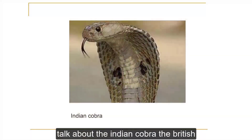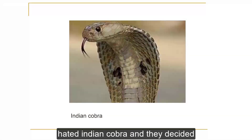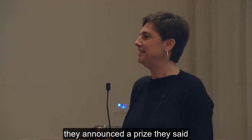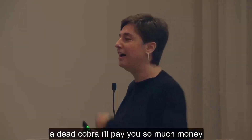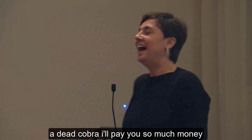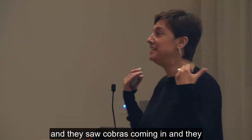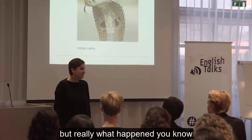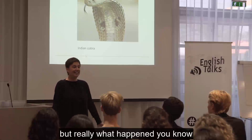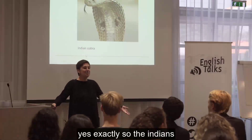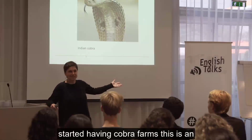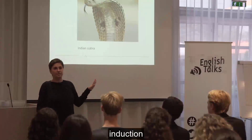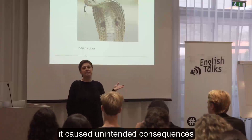Before that, I want to talk about the Indian Cobra. The British rule hated Indian Cobra and they decided they were going to get rid of it. So they announced a price policy — they said, 'You bring me a dead cobra, I'll pay you so much money.' And they saw cobras coming in and said, 'Aren't we really successful in our policy? What a good idea.' But really, what happened? The Indians started having cobra farms. This is an example of failure in backward induction — it caused unintended consequences.